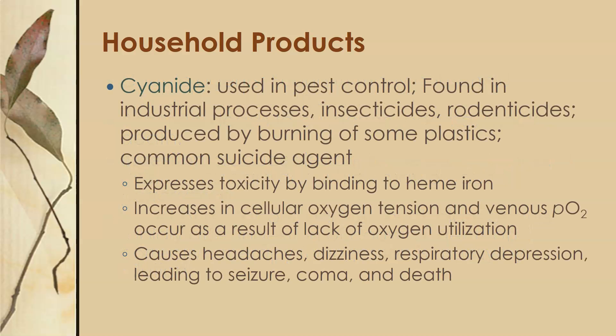Cyanide is used in pest control and is found in industrial processes, insecticides, and rodenticides. It is produced by the burning of some plastics and is also a common suicide agent. Cyanide expresses toxicity by binding to heme iron. It increases cellular oxygen tension and venous PO2 as a result of the lack of oxygen utilization, and can cause headaches, dizziness, respiratory depression, which can lead to seizure, coma, and death.